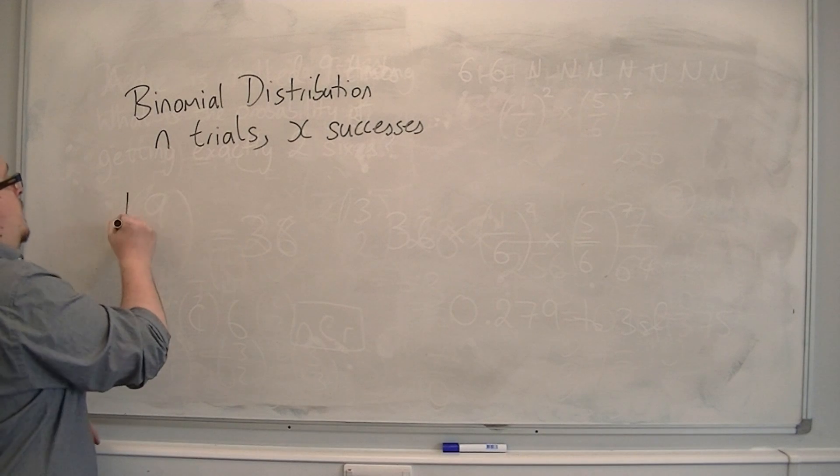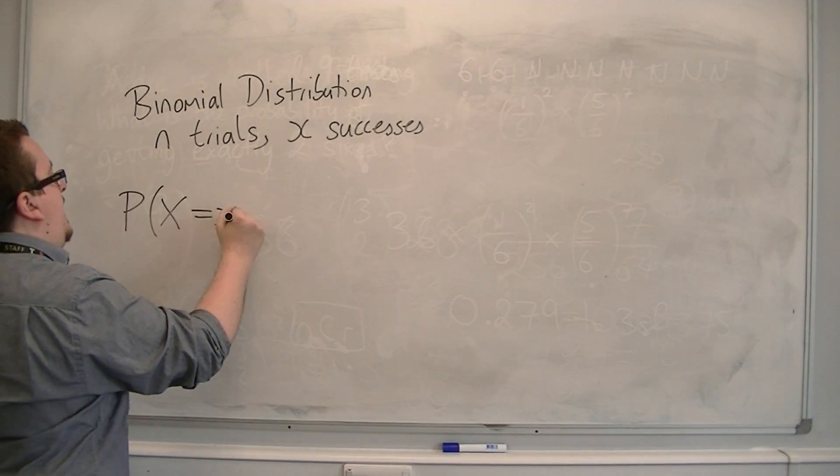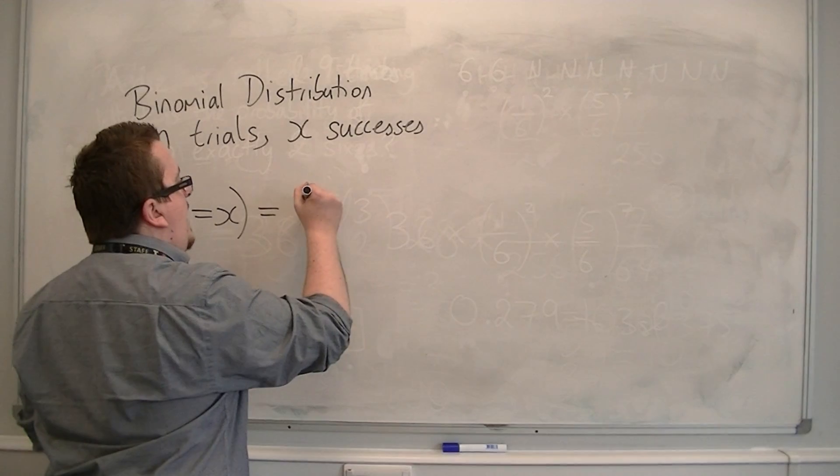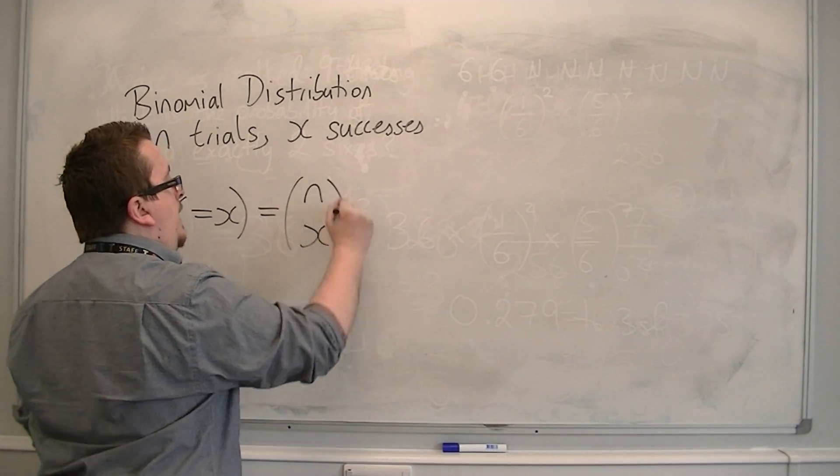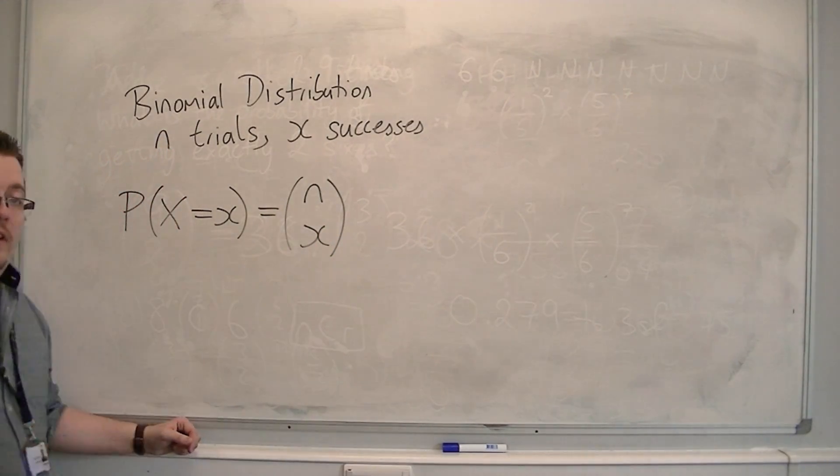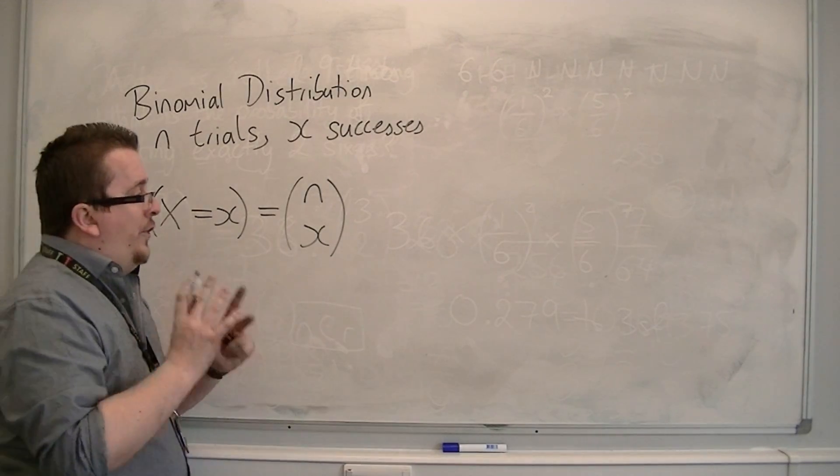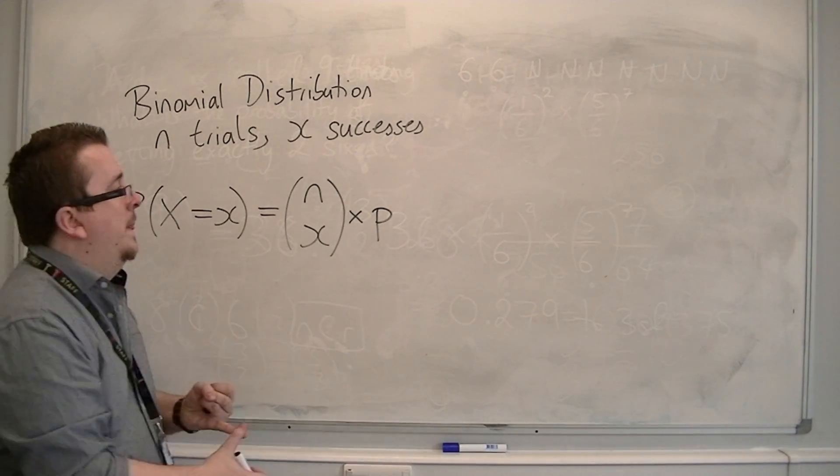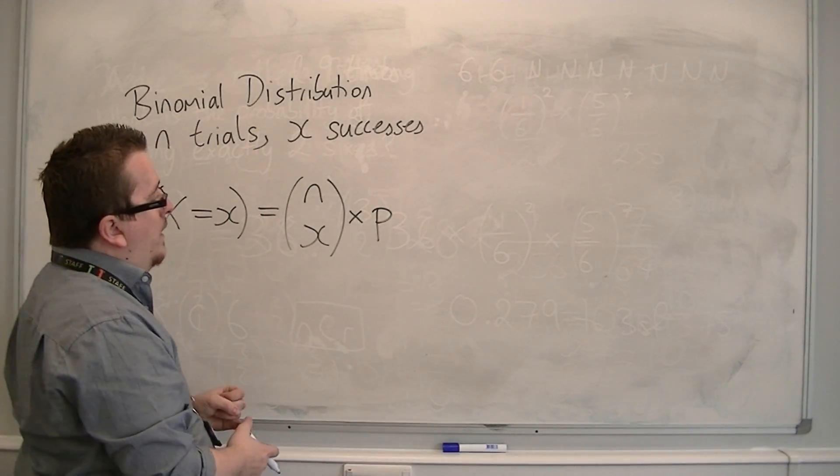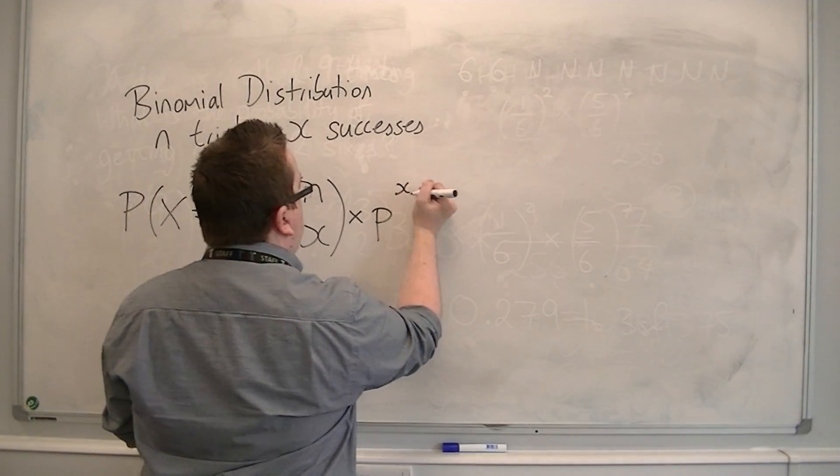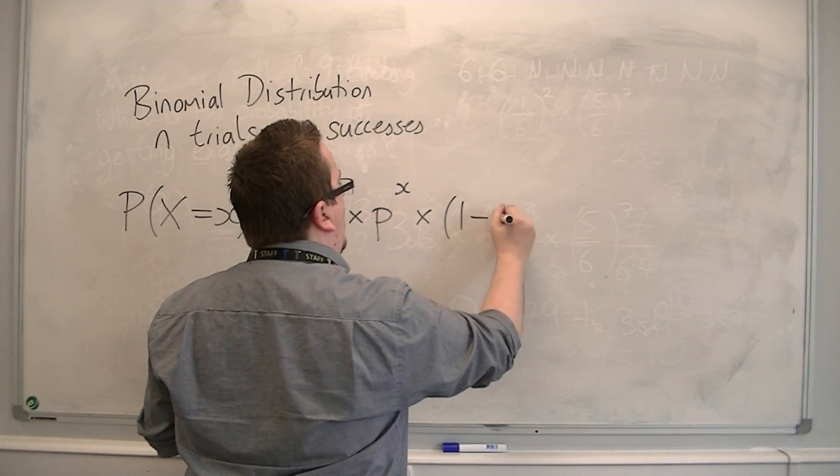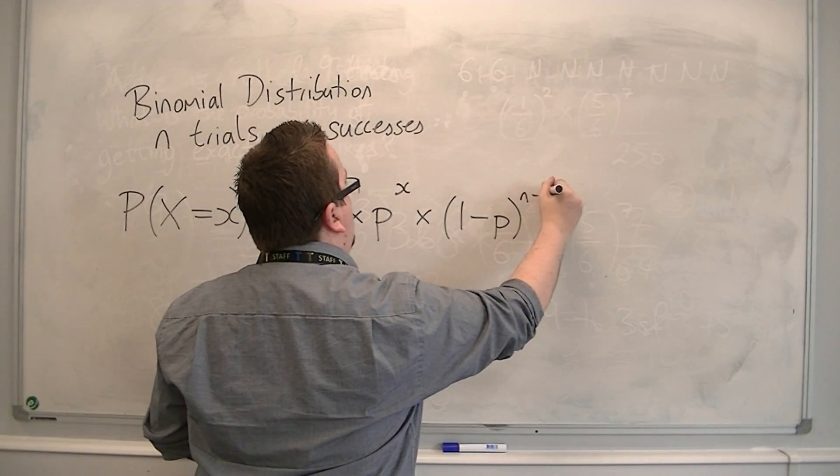Then, the probability of X being equal to x, and I'll explain that momentarily, will be n choose x, so out of n possibilities, I want x number of successes, times by the probability of success to the power of x, times by the probability of one minus p to the n minus x.